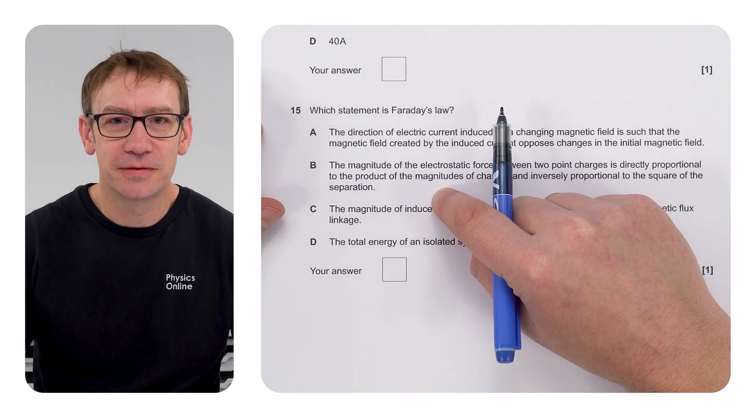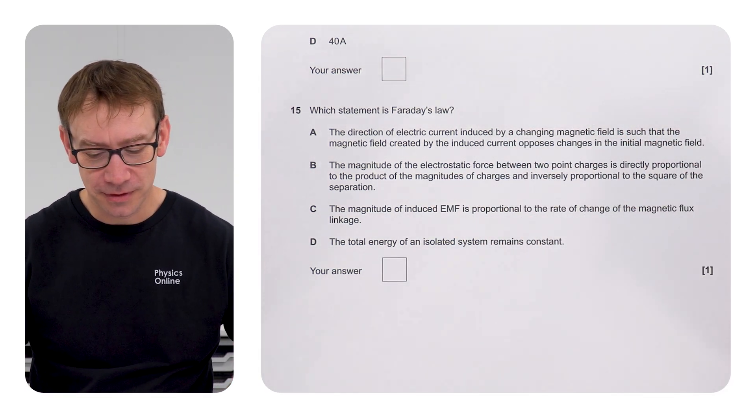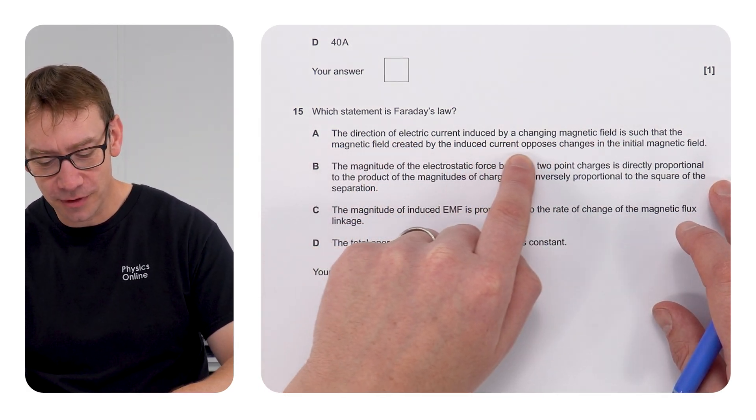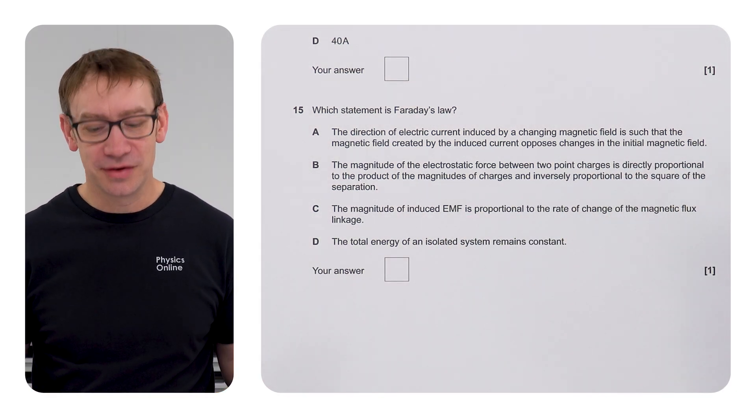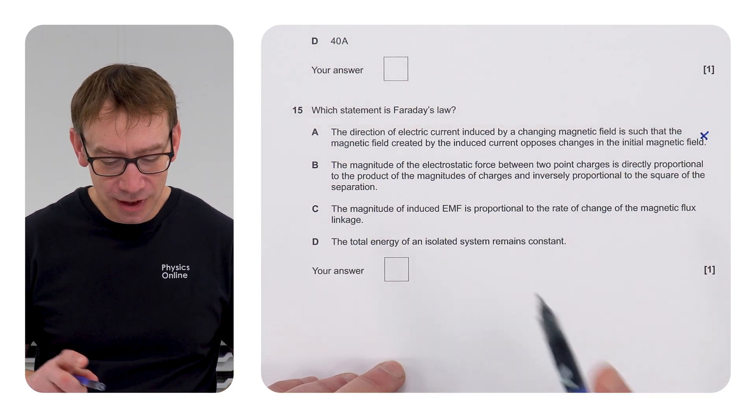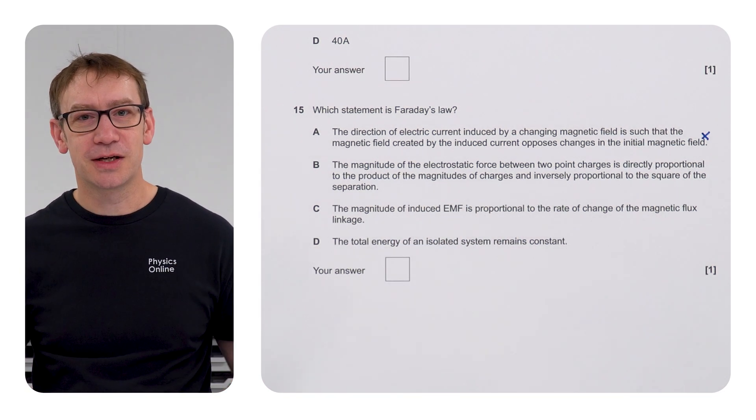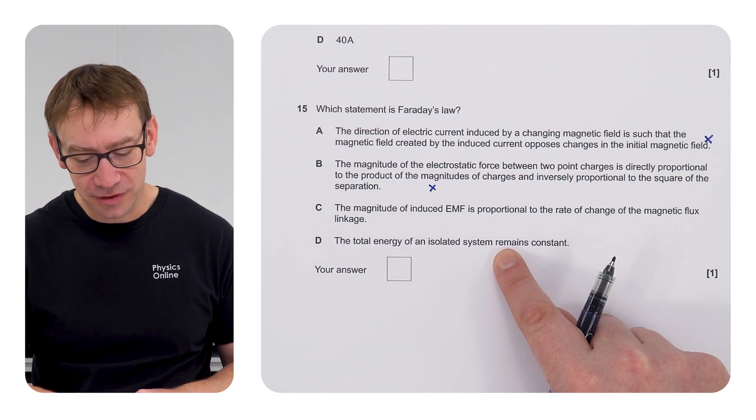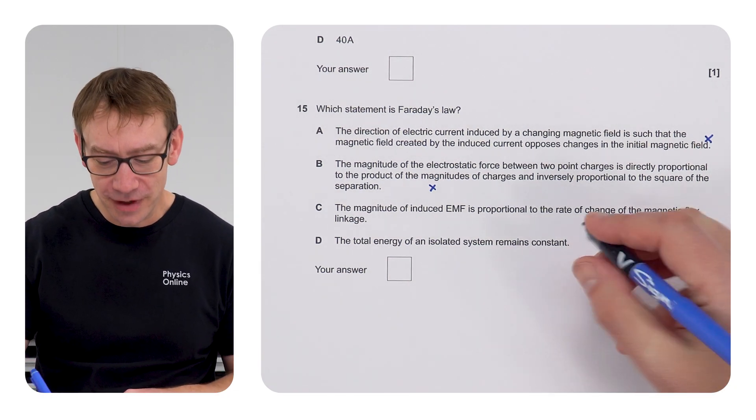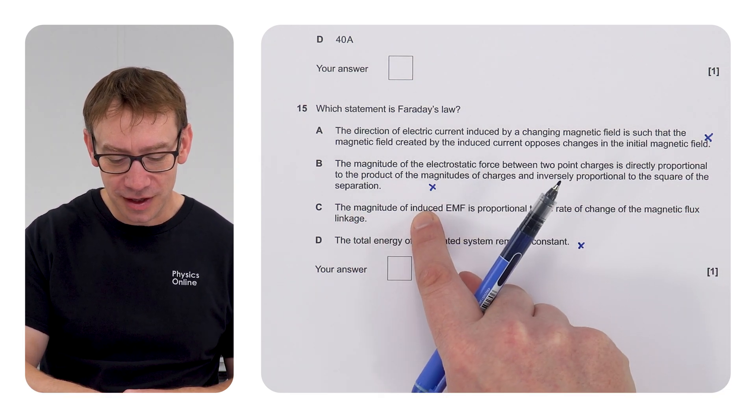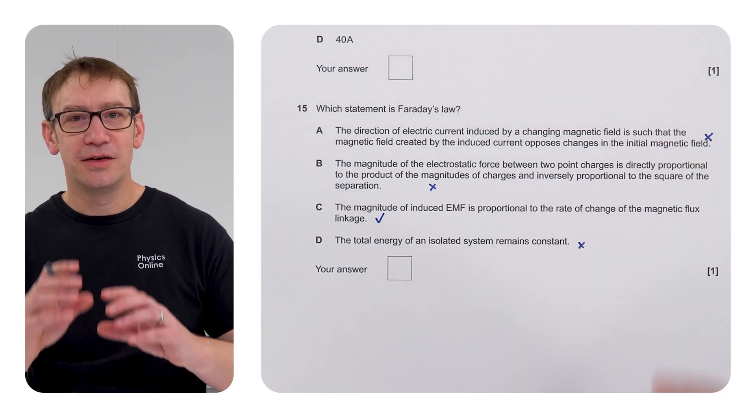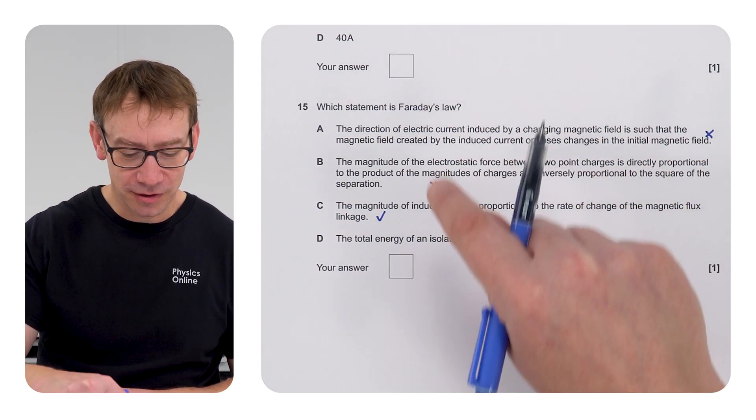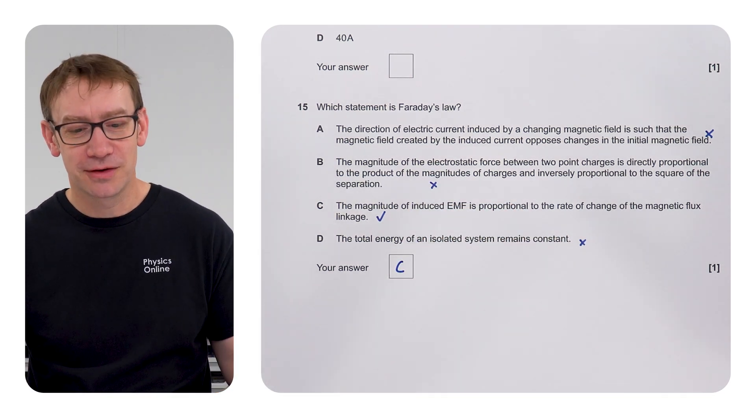The final one is which statement is Faraday's law? We've got a load of stuff here to read through. The first one, if we're looking at the direction of electric current induced by a change of magnetic field, that's just basically Lenz's law so it's not that. The second one is about the magnitude of electrostatic forces, so that's going to be to do with Coulomb's law, so it's not that. The total energy of an isolated system remains constant. Basically that's just the law of conservation of energy, so it's not that, and therefore the answer is C. If you know your definitions that means you can just easily look through these, identify which of them relate to whose law, and therefore Faraday's law is C. Not even a calculation needed.